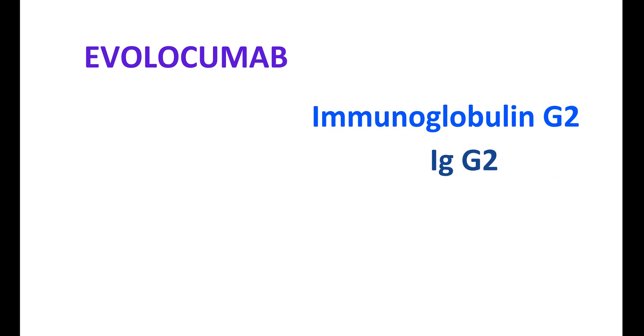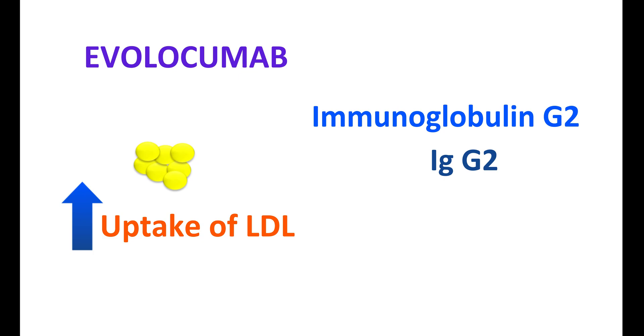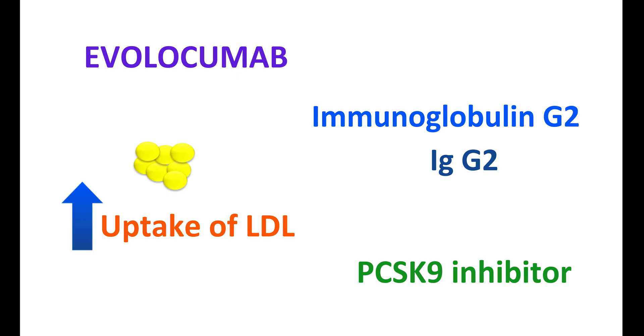Evolocumab is one of the monoclonal antibodies that is an analog of human immunoglobulin G2, commonly known as IgG2. It is one of the new medications that acts by a unique mechanism. This drug increases the uptake of LDL by the liver, thereby reducing serum LDL cholesterol levels, and it is classified as a PCSK9 inhibitor.